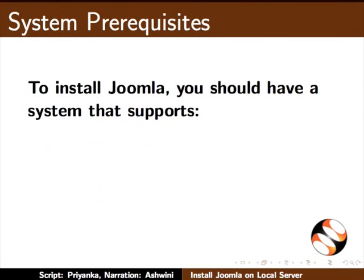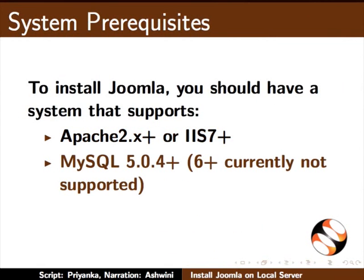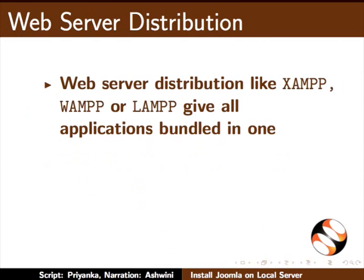To install Joomla on your system, you should have a system supporting Apache 2.x or higher, or IIS 7 or higher, MySQL 5.0.4 or higher, and PHP 5.2.4 or higher. Please note that MySQL 6 and higher versions are currently not supported. You can either install these separately or together using a web server distribution like XAMPP, WAMPP, or LAMPP, which bundles Apache, MySQL, and PHP in one.